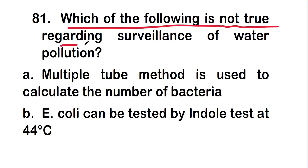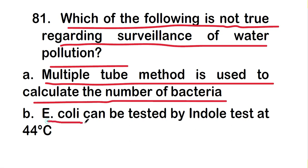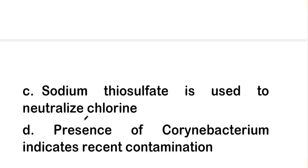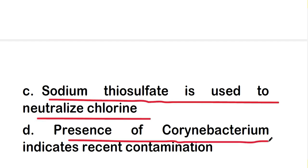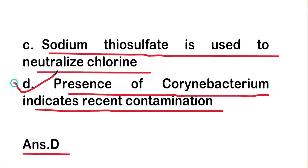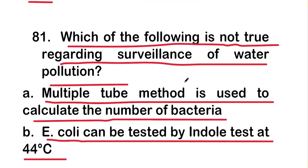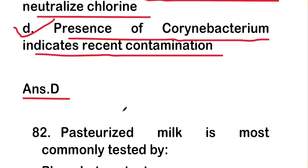The next question: which of the following is not true regarding surveillance of water pollution? Options are: multiple tube method is used to calculate the number of bacteria; E. coli can be tested by indole test at 44°C; sodium thiosulfate is used to neutralize chlorine; or presence of Corynebacterium indicates recent contamination. The right answer is option D — presence of Corynebacterium indicating recent contamination is not true.